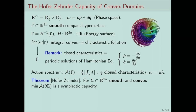Now convexity enters the story. If the hypersurface is the boundary of a convex domain, there is a beautiful result by Hofer and Zehnder that the minimal element in the action spectrum is a symplectic capacity. More precisely, there is a symplectic capacity known as the Hofer-Zehnder capacity, defined in a completely general setting, and the theorem is that if you look at this capacity on the class of convex domains in R^{2n}, it coincides with the minimal element in the action spectrum.